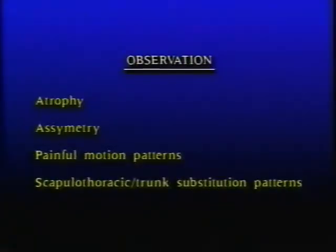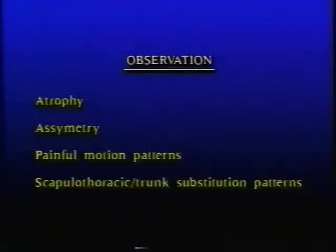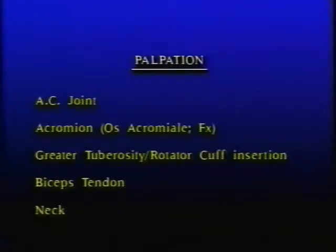Observation is the first step in examination of the shoulder. One should look for atrophy, asymmetry between the two shoulders, painful motion patterns, and scapulothoracic and trunk substitution patterns in the absence of proper normal glenohumeral motion.